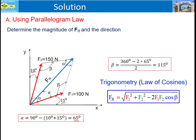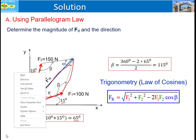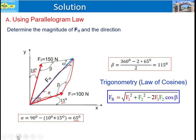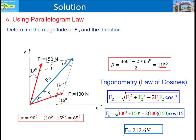Using the law of cosines, we can determine the resultant vector from the triangle. FR is equal to the square root of F1 squared plus F2 squared minus 2 times F1 times F2 times cosine beta. With beta equal to 115 degrees and knowing F1 and F2, the resultant vector FR is equal to 212.6 Newtons.